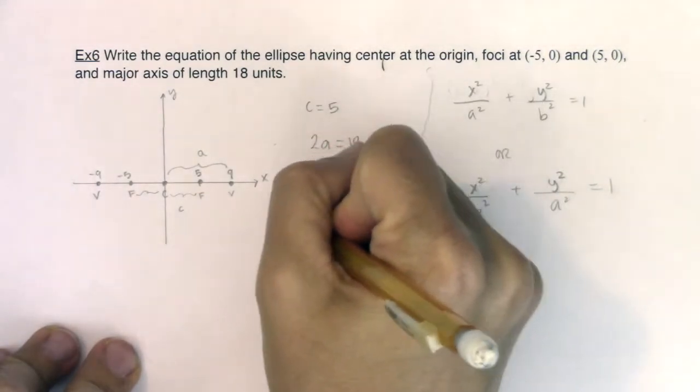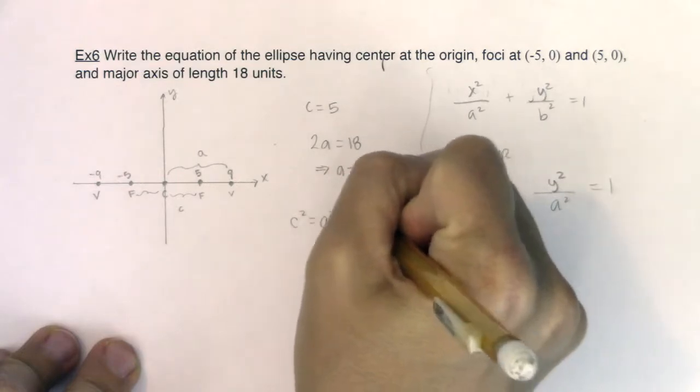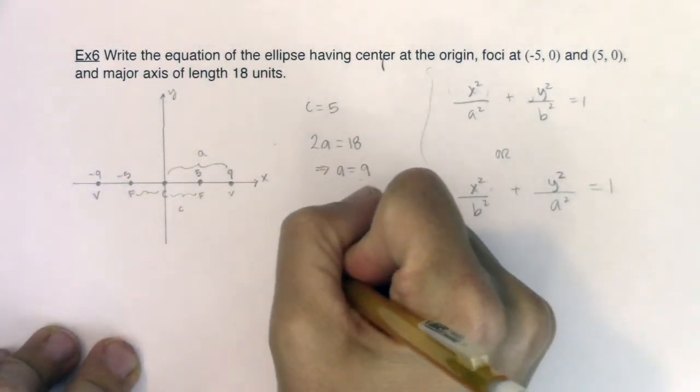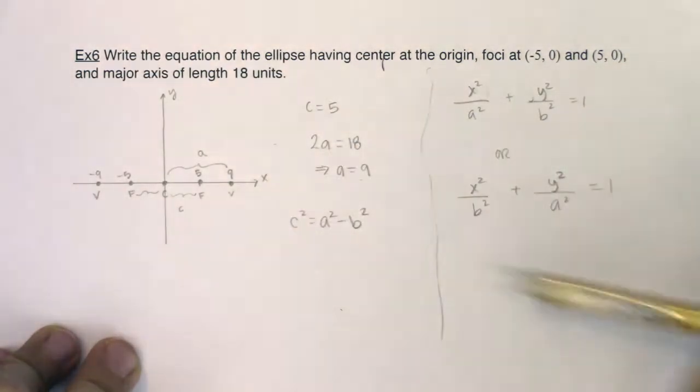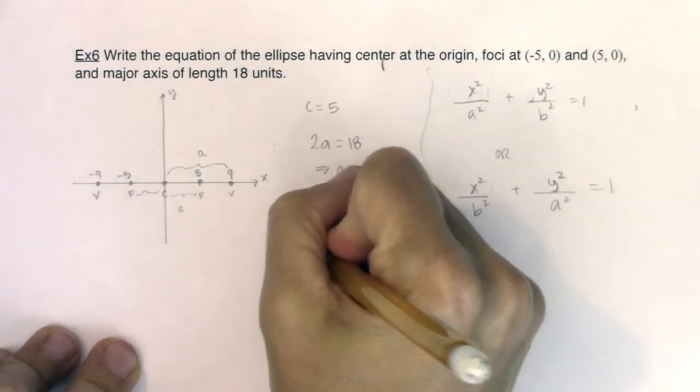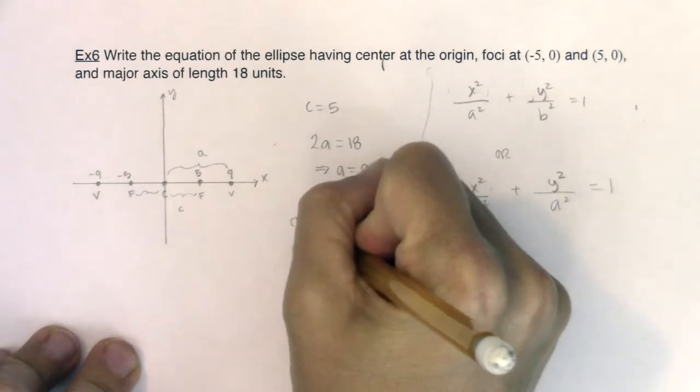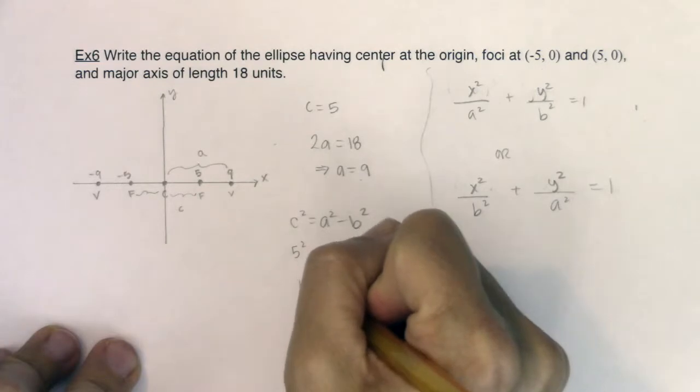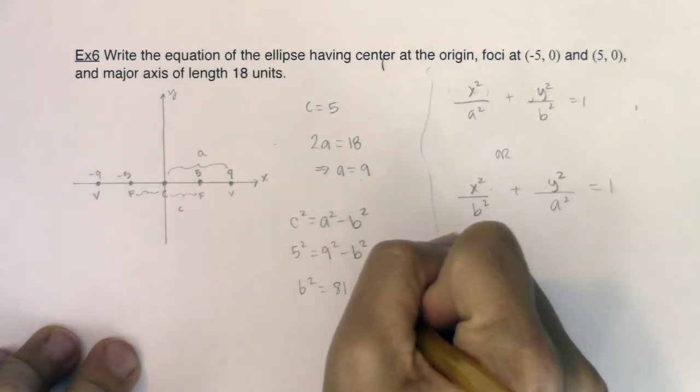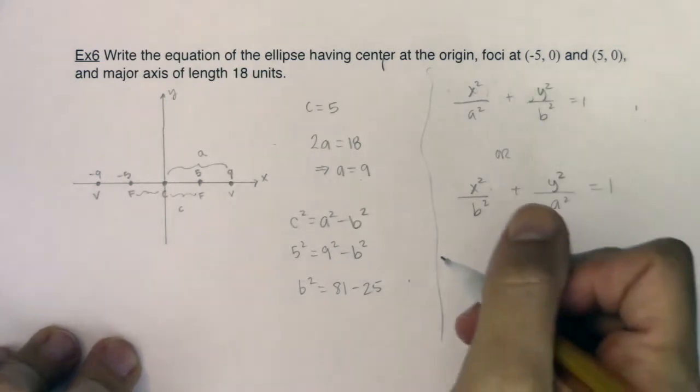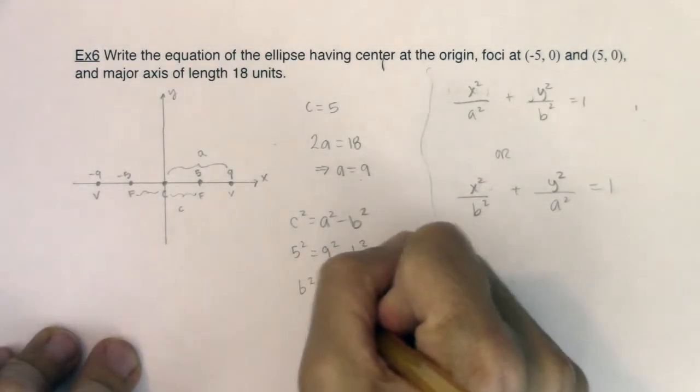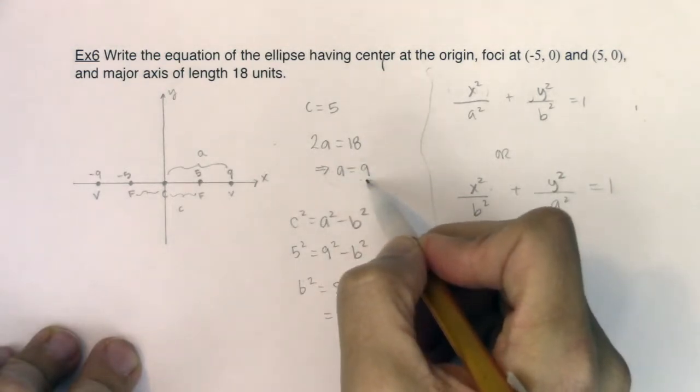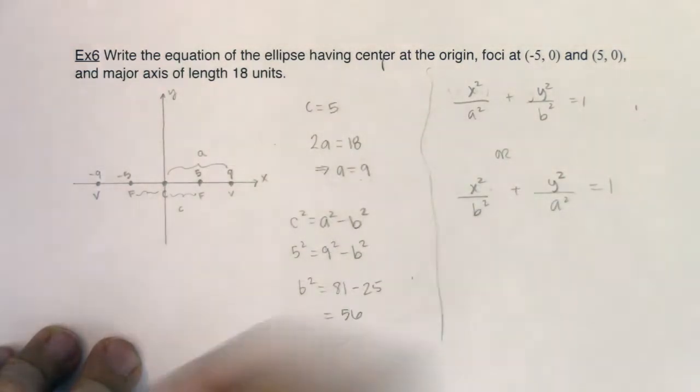And again, I know c² is equal to a² minus b². So let's go figure this out. So c², 25 would be equal to 9² minus b². If I simplify that a little bit, I'm going to get b² is equal to 81 minus 25. And 81 minus 25 is equal to 56. So I know a is 9, making a² 81. I know c is 5 and I know b² is 56.